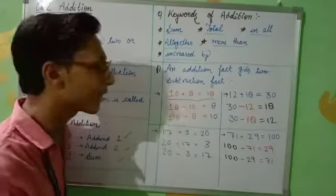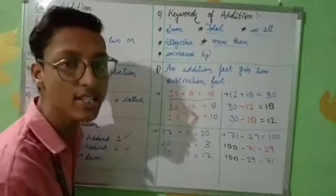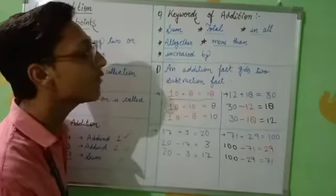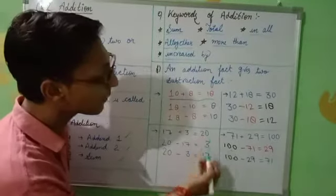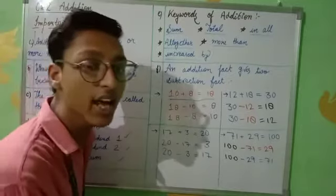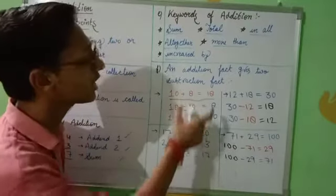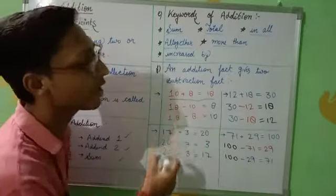Without doing actual subtraction, we can simply write these subtraction facts. From one addition fact, two subtraction facts can be made.